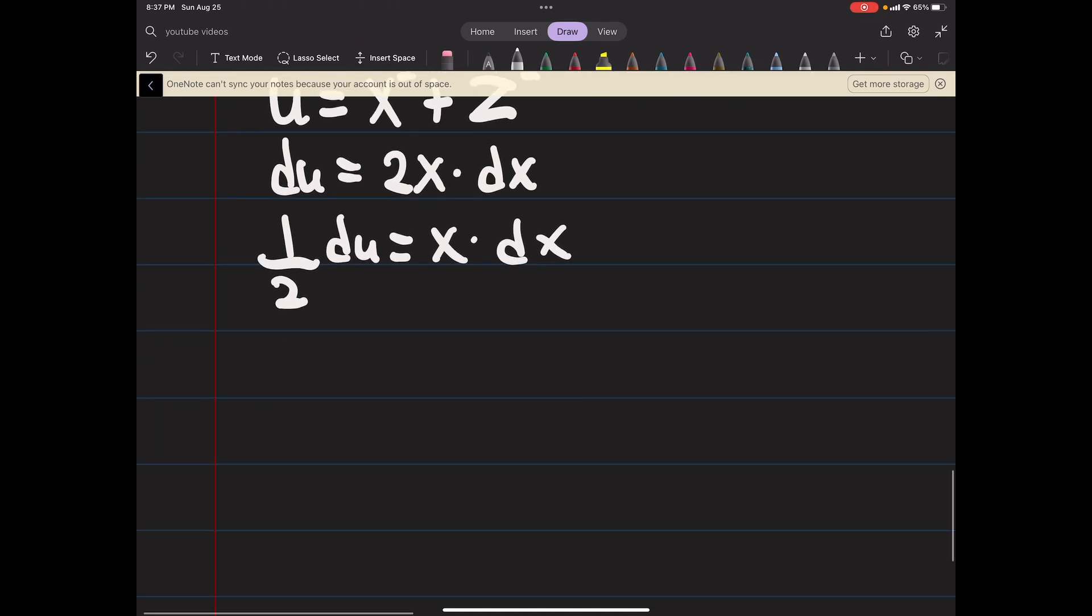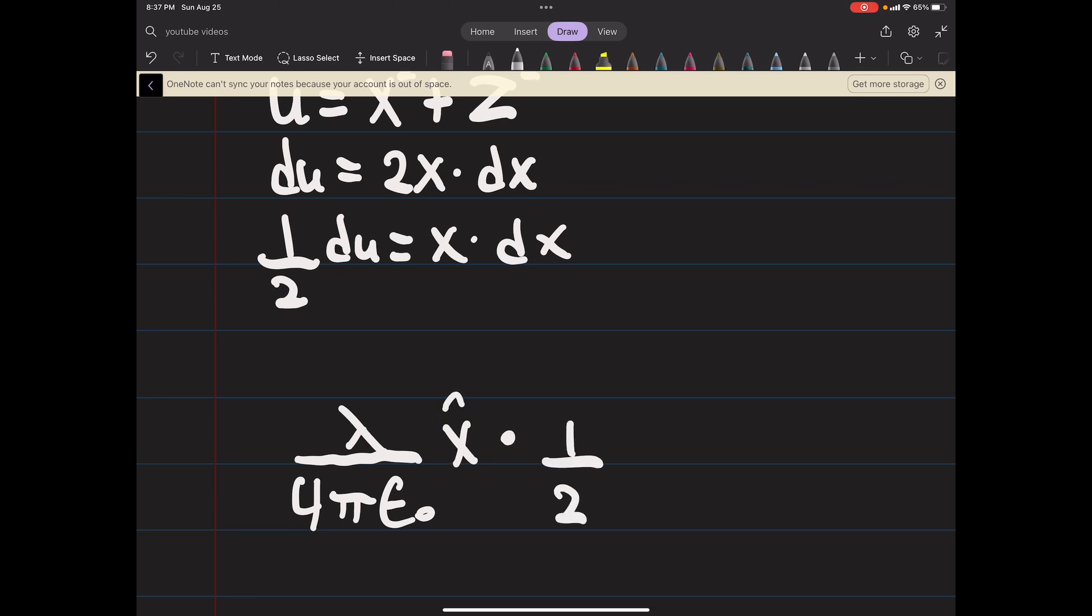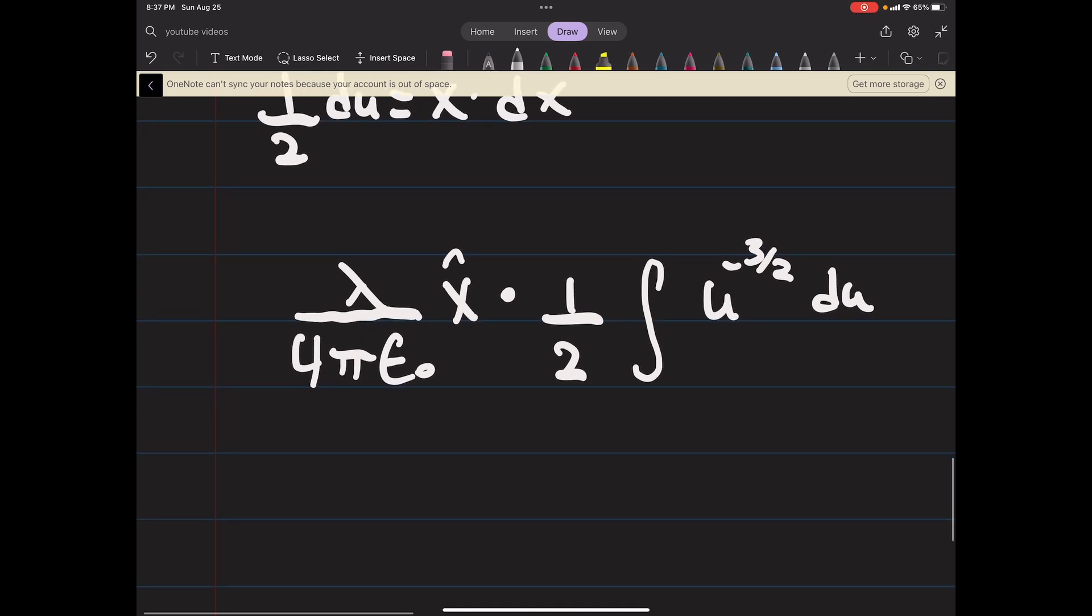That x in the numerator actually makes our life a little easier. We have our constants out front, x hat times one half coming from the du, the integral of u to the minus three halves du. So you add to that, you'll get a minus one half. So minus lambda over 4 pi epsilon naught x hat direction.